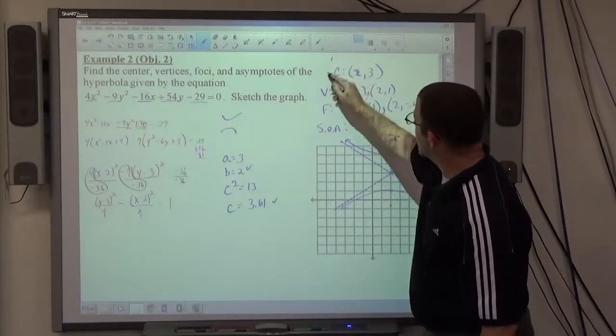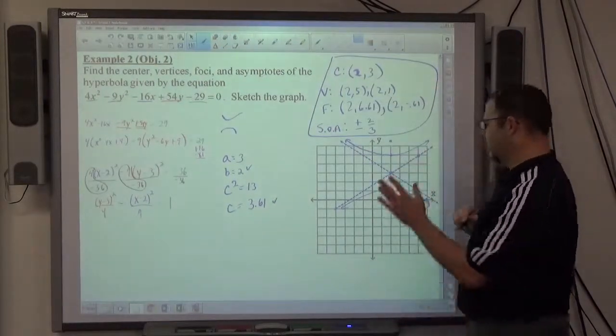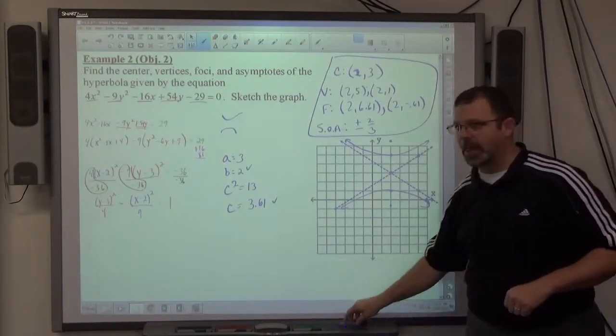So I've got my center, vertices, foci, asymptotes identified. Again, for the asymptotes all I want is the slopes. And again, give me a good sketch based on all that criteria.